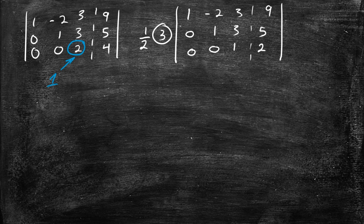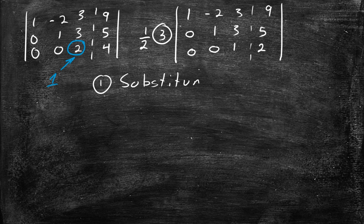What we wanted has been accomplished: we have 1s in the diagonal and 0s below those 1s. We can now use the substitution method. There's also another method called the Gauss-Jordan elimination method where you continue going backwards — I'm going to show you both to complete this problem. For substitution, the first term is x, the second is y, and the third is z. We start from the bottom going up.